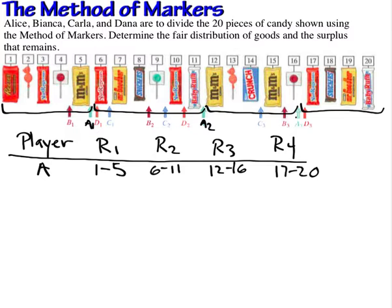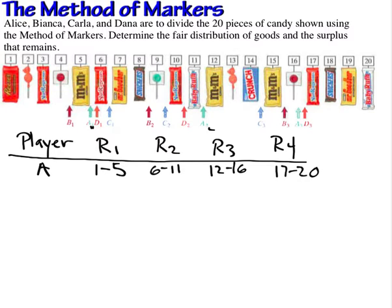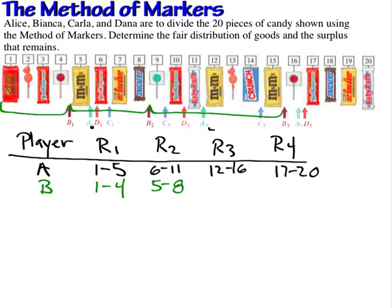We want to do this for each of the players. Looking at player B, Bianca: items up to her first chip are 1 through 4. The next marker includes items 5 to 8. The third marker covers items 9 to 15. And the fourth round fair share is items 16 through 20.